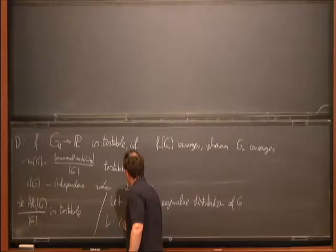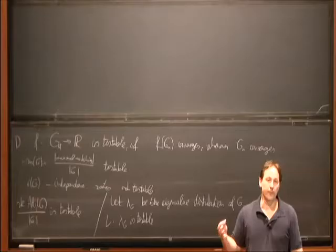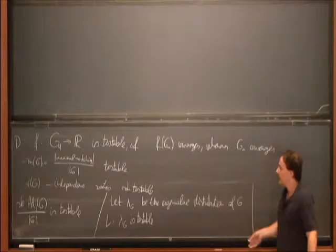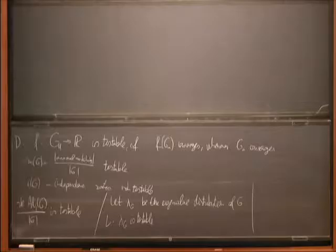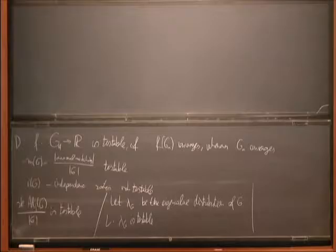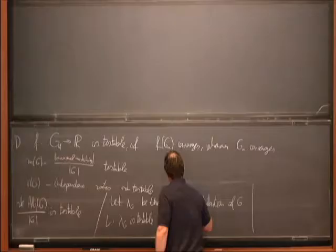Let λ_G be the eigenvalue distribution of the adjacency operator of G — take the eigenvalues with multiplicity, normalize to get a probability measure. This is a nice lemma: λ_G is testable in the sense that if you have a convergent graph sequence, then the eigenvalue distribution weakly converges. What does it converge to? The Benjamini-Schramm limit is a random rooted graph; an infinite graph with a root does have a spectral measure. You take the expected spectral measure with respect to the randomness — that is the spectral measure of the random rooted limit graph, and that's where it converges to.